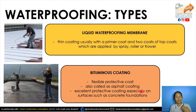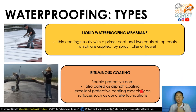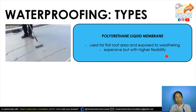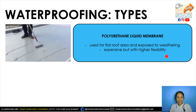Each type of waterproofing has its own purpose depending on the area — whether internal or exterior — and the level of exposure. The last type is the polyurethane liquid membrane, similar to the liquid membrane previously discussed. It is used for flat roof areas exposed to weathering, so it can be used outdoors. It is expensive but offers higher flexibility. Unlike the bituminous roll which is difficult to bend and requires straight edges, liquid types can be applied on any shape, including sloped surfaces.